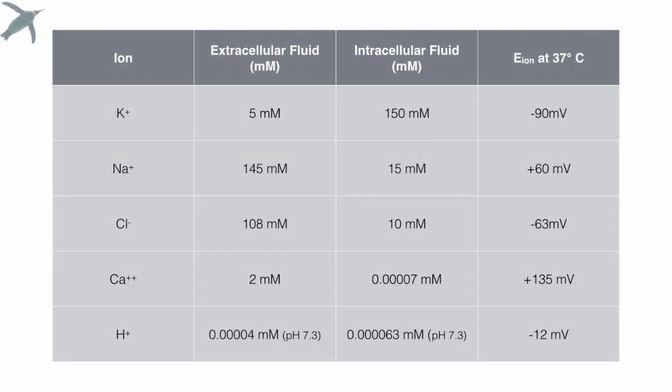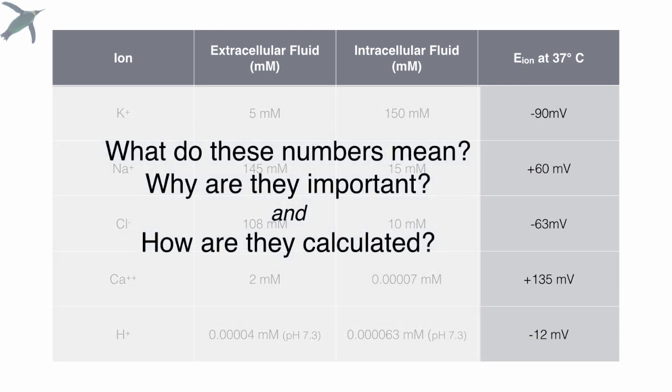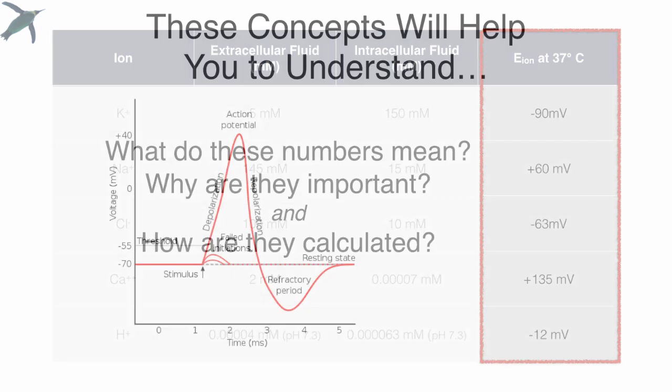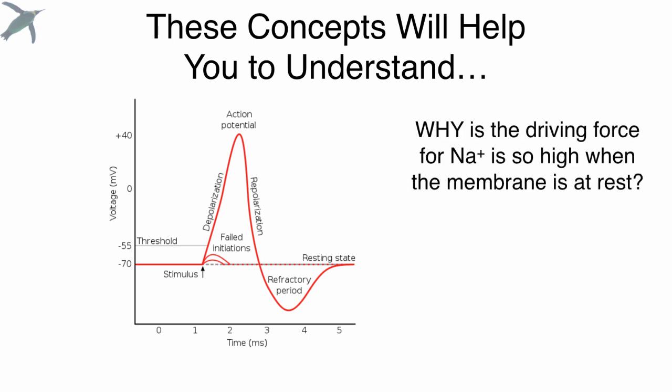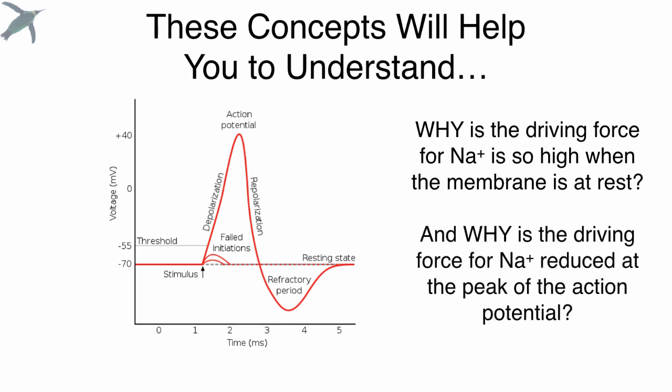You're going to see tables like this, and you're going to have this little column here, the equilibrium potential of these various ions. And you should be wondering what these numbers mean and why we make such a big deal about them, and how they are calculated. And if you can understand that, it's going to help you a lot in understanding things like when you look at the action potential, for example. Why is the driving force for sodium so high when the membrane is at rest? And yet, it drops at the peak of the action potential.